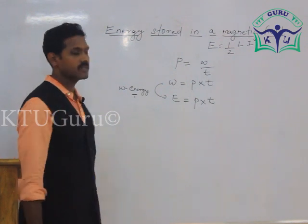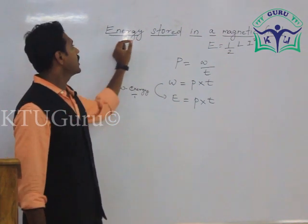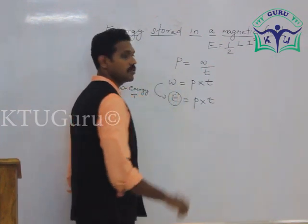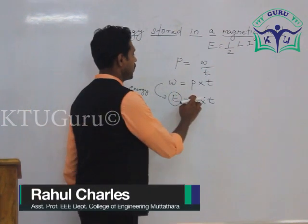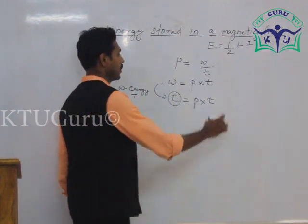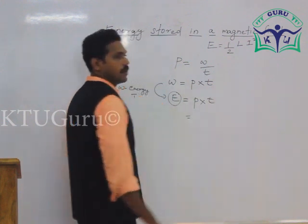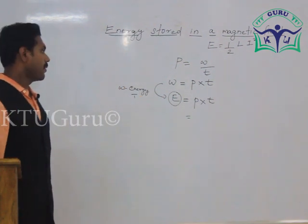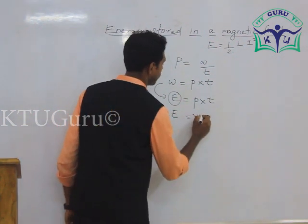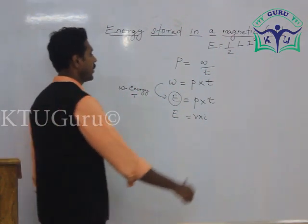Energy E equals P into T is a basic expression for energy. Here we have to derive the energy stored in a magnetic field, so we need an expression for electrical power. The basic expression for electrical power is voltage into current, so P equals V into I, and therefore energy equals voltage into current into time.